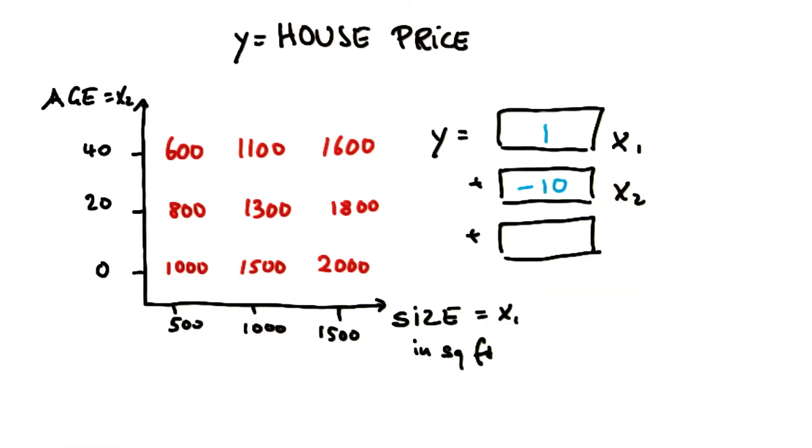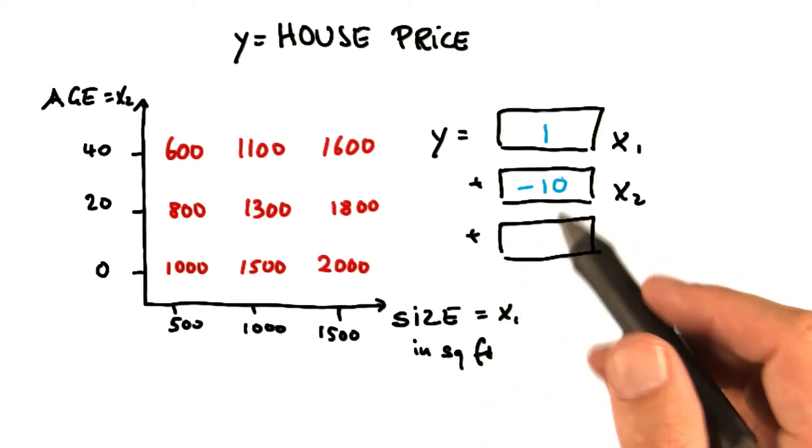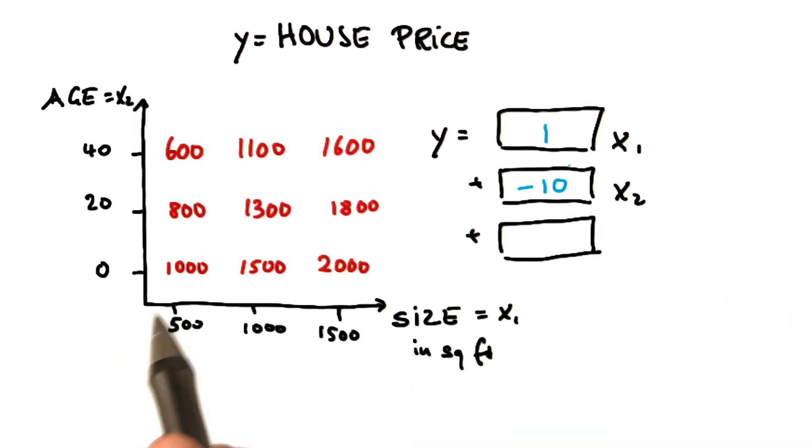And eventually, as we try to find the y-intercept, so to speak, or put differently the constant over here, we plug in those two constants over here on the left data point. 500 times 1 would be 500.